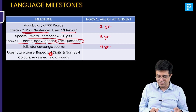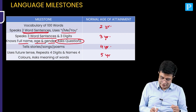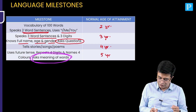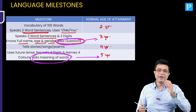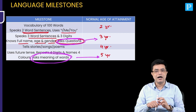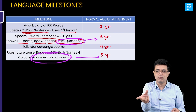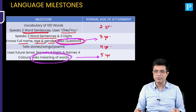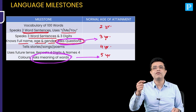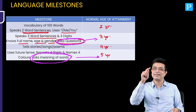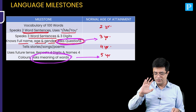Using future tense, repeating 4 digits, and naming 4 colors all come at 4 years of age. Then asking the meaning of words starts from 5 years of age. These two milestones are important to distinguish: asking questions is 3 years, while asking the meaning of words is 5 years. Asking questions is simple — 'Mom, where were you?' That is asking a question. But 'Mom, what is the meaning of parlor? What do you do in a parlor?' — that is asking the meaning of words. The first begins at 3 years, the second at 5 years. I hope the distinction is clear.